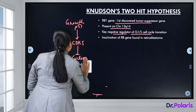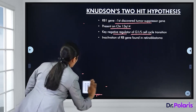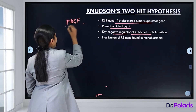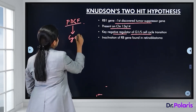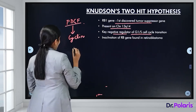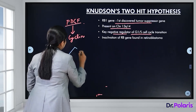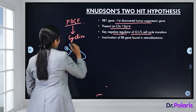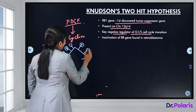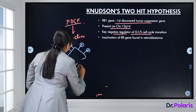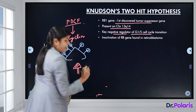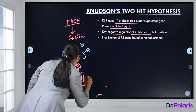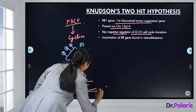When there are growth-promoting signals like platelet-derived growth factor, cyclins are activated and the retinoblastoma protein becomes hyperphosphorylated. In this hyperphosphorylated form, it fails to bind to E2F, so E2F is freely available for transcription and transcription proceeds, allowing cell growth.